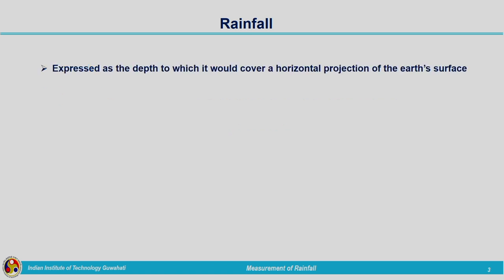Rainfall is expressed in terms of depth — depth of rainfall. We talk about this many millimeters or centimeters of rainfall, expressed as the depth of rainfall to which it would cover a horizontal projection of the earth surface. When IMD reports a rainfall of 10 centimeters, that 10 centimeters is the depth of rainfall on the horizontal surface — the projected area of earth without considering the curvature.